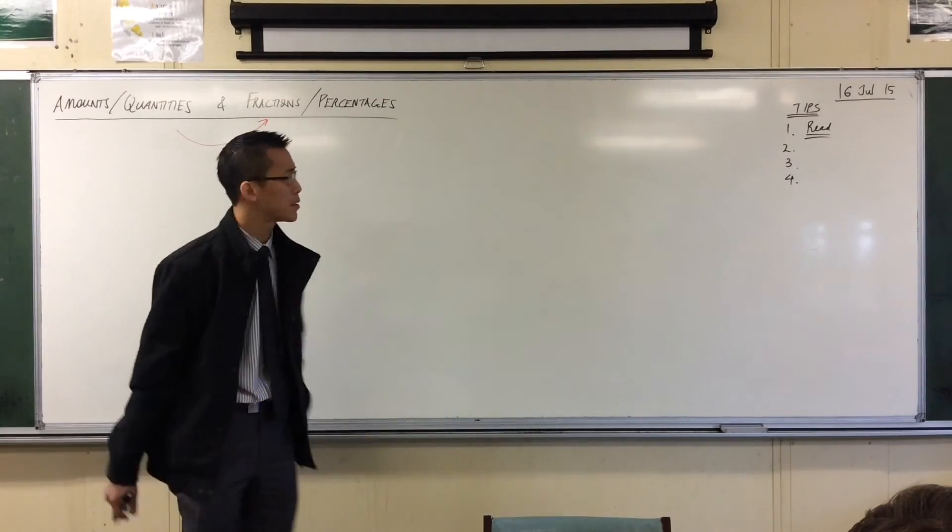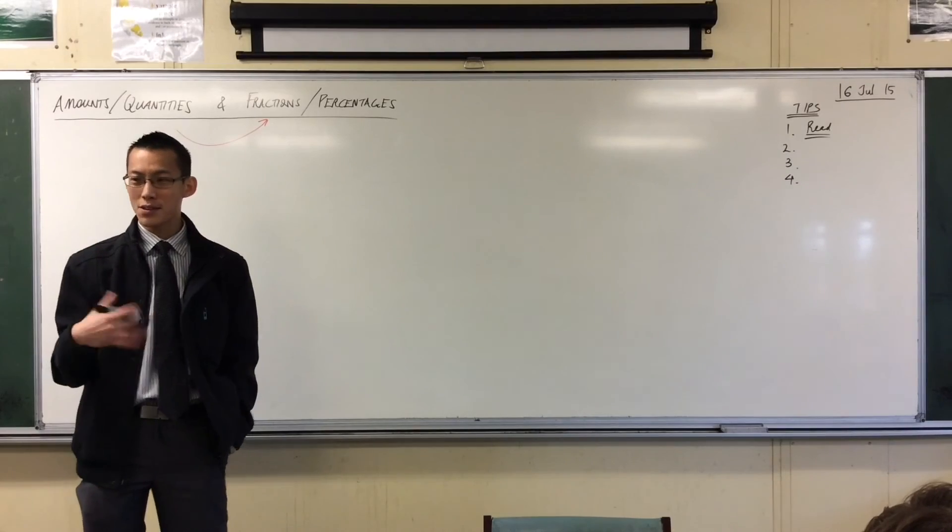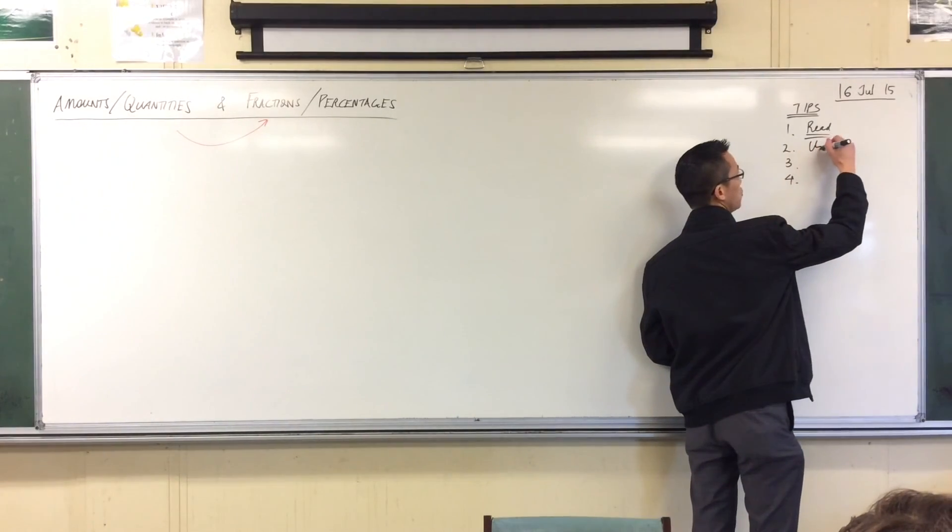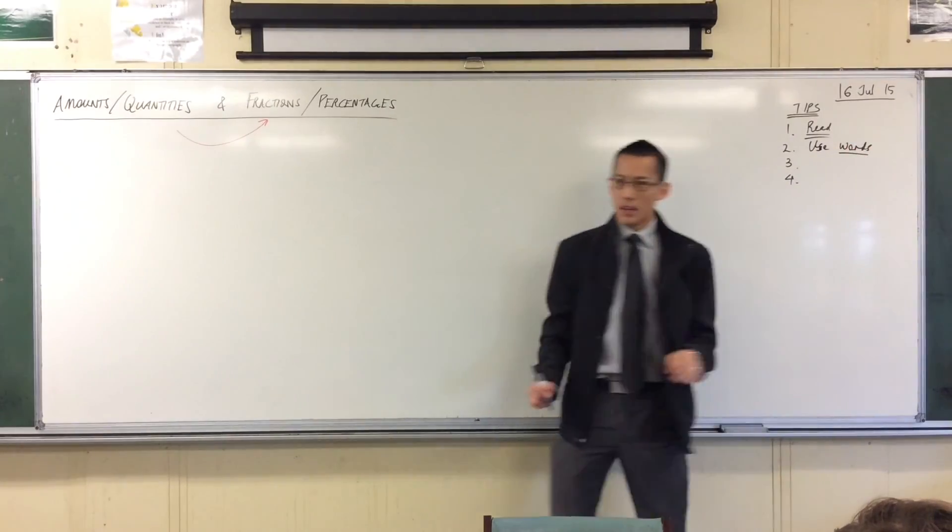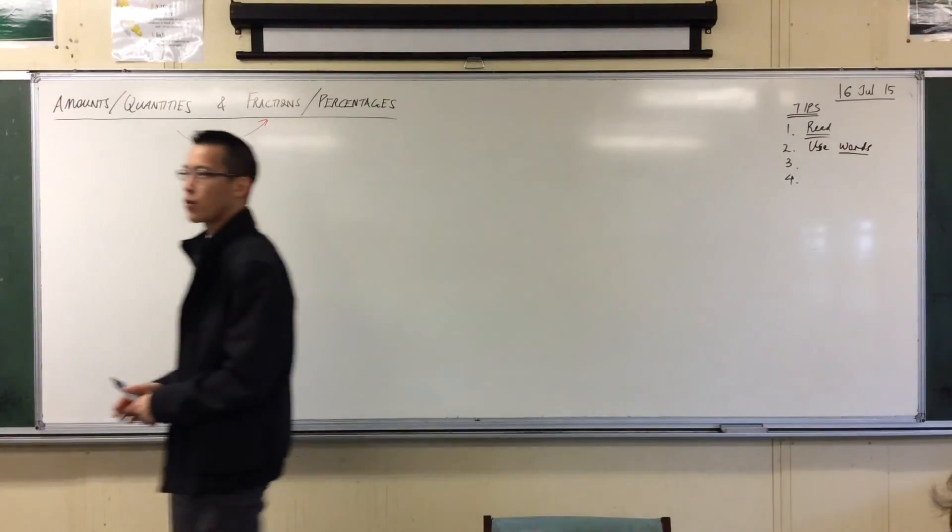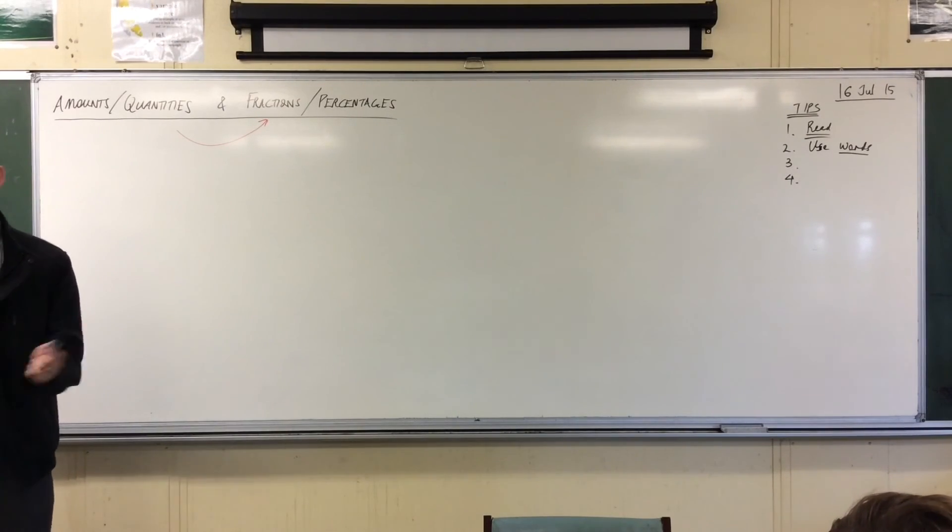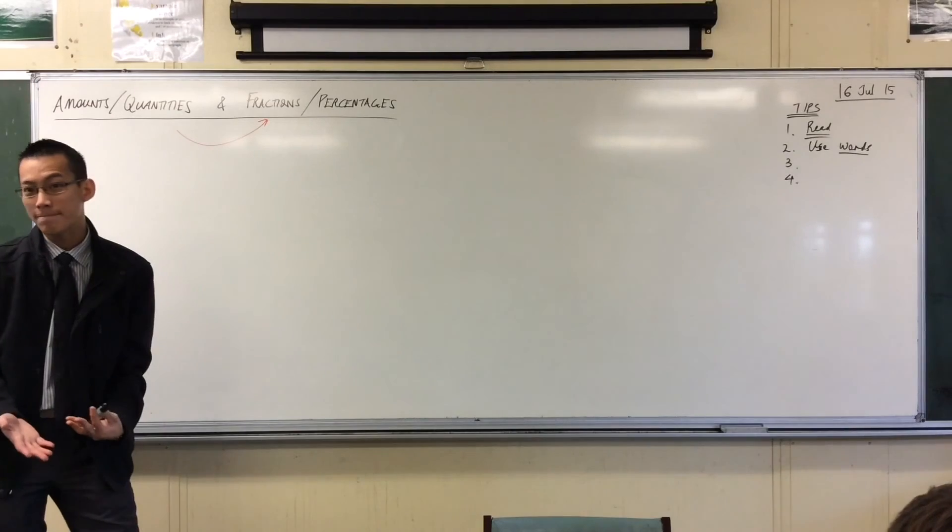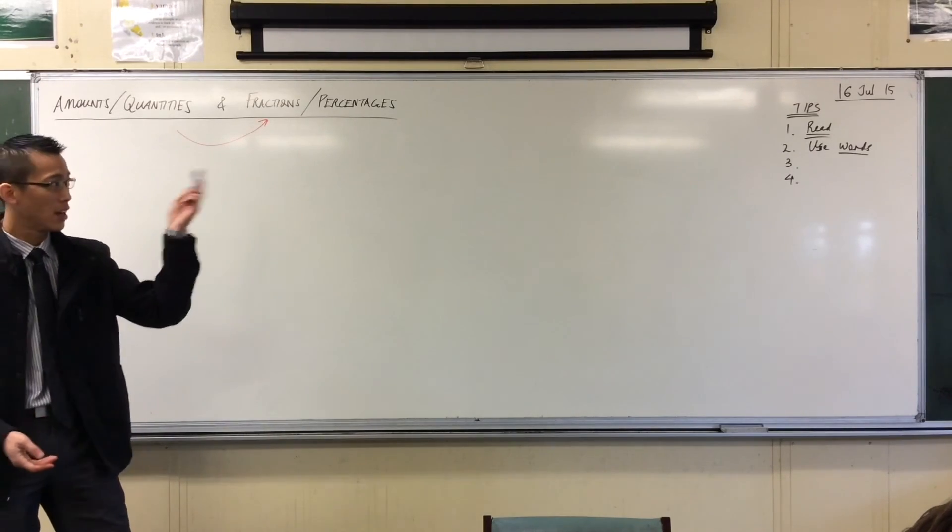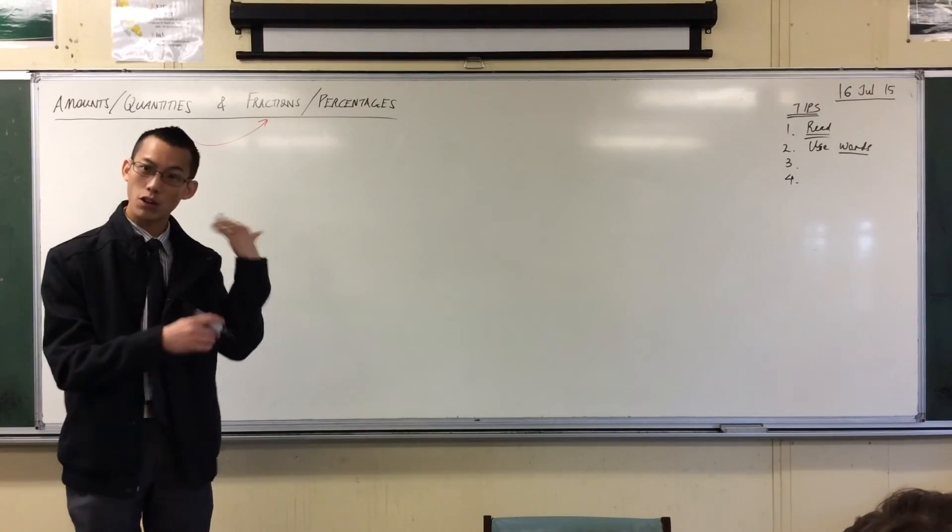Tip number two is kind of like the opposite. There's so many words there. That's why you have to read carefully, but because there are so many words in the question, you ought to use words in your answer. Your answers to all of these kinds of questions shouldn't just be a series of numbers and equations. You probably can get the right answer just with the numbers and equations. This is math after all, but in order to be able to communicate clearly what your numbers and equations actually mean and then get a right answer out of it, you should be using words in the actual formation and working of your question, which is what I'll show you.